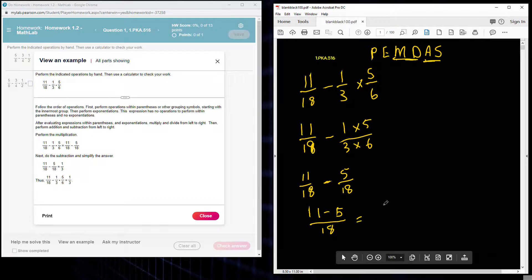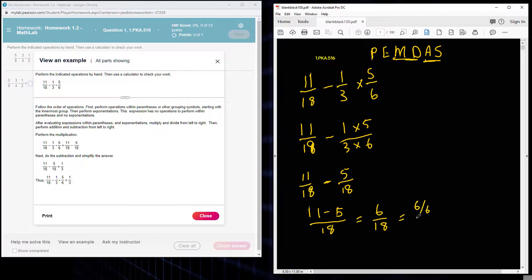11 minus 5 is 6 over 18, and this will simplify. 6 divides into 6 one time, and 18 divides by 6 three times. My final answer here is 1/3.